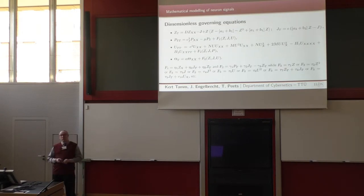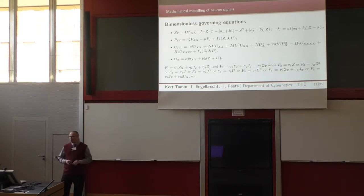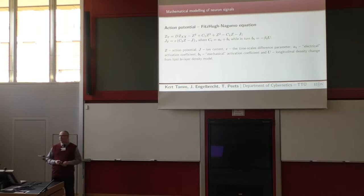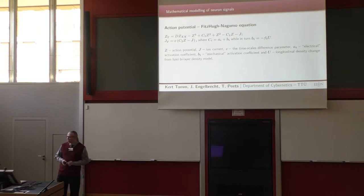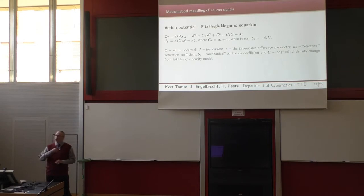This is the set of model equations we are going to solve for our numerical example. I will go over those briefly, one by one, and there are also a couple of slides for contact forces. For action potential, we use the FitzHugh-Nagumo equation — it is good enough because what we need is the correct signal shape. In the original notation the FitzHugh-Nagumo equation has one activation coefficient, but we have split it in two. This mechanical activation coefficient allows the biomembrane density to affect the electrical signal.